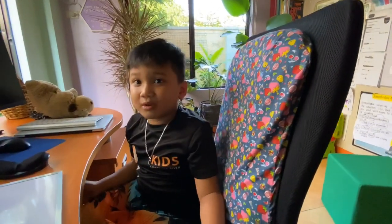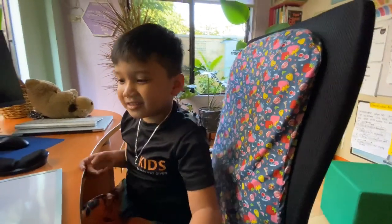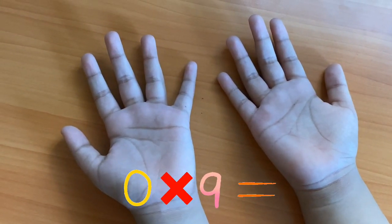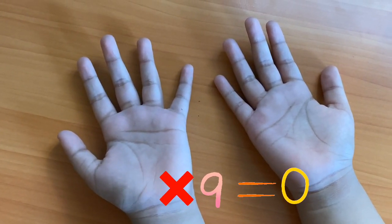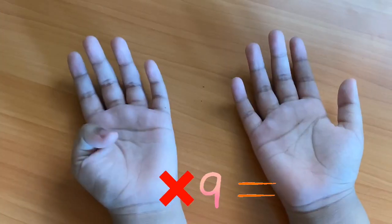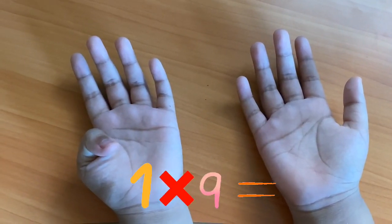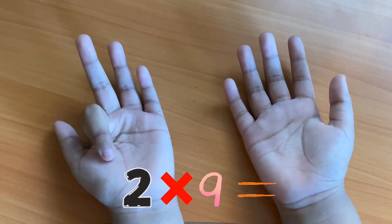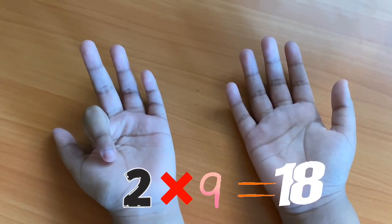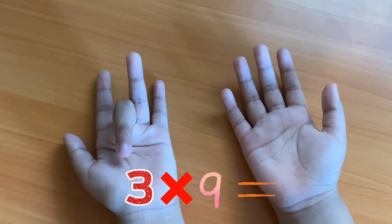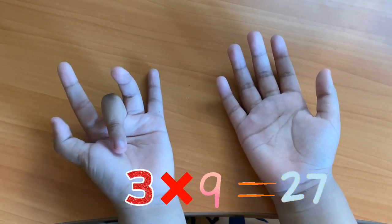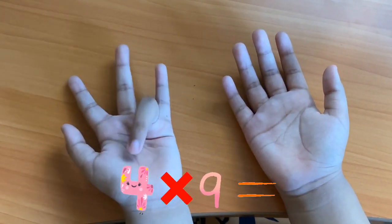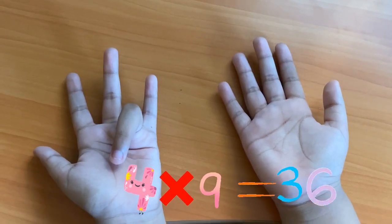Now, let's try 0 to 9. Ok. Let's start. 0 times 9 equals 0. 1 times 9 equals 9. 2 times 9 equals 18. 3 times 9 equals 27. 4 times 9 equals 36.